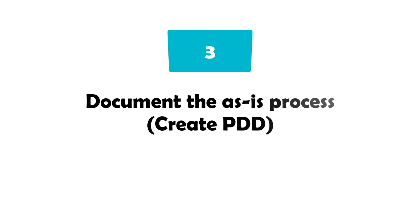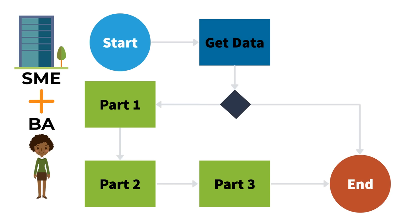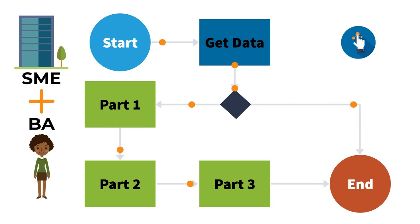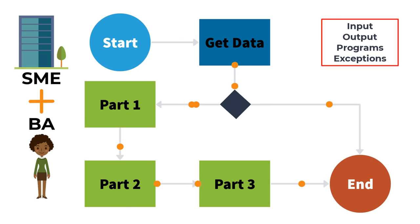The third task is to document the as-is process. The business analyst creates the PDD, which means Process Design Document. The business analyst works with operations SMEs and stakeholders to fully and clearly document the as-is process to the keystroke level of detail required for a robotic process automation program. The business analyst will document every click in this document. At the end, the PDD contains all information about the process: input, output, programs needed, and exceptions which may occur due to system failure or business logic.